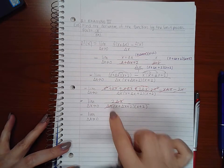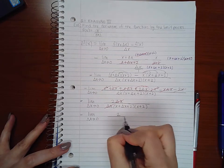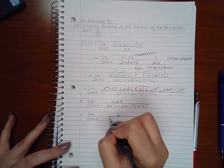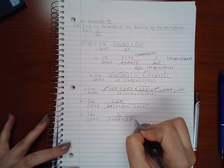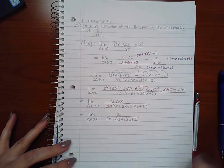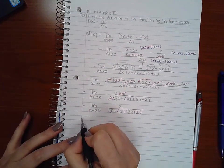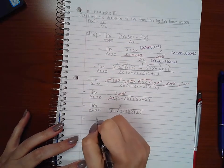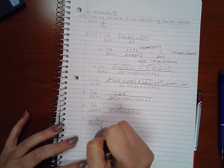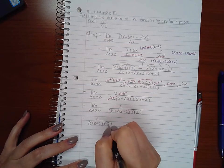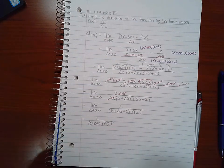And since this delta x factor is no longer there when I direct sub 0 for delta x, it will no longer create an undefined fraction. Therefore I am allowed to do direct sub. So I will have 2 over x plus 0 plus 2 and x plus 2. It's only delta x that's going to 0.